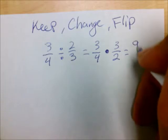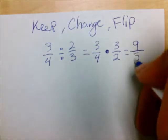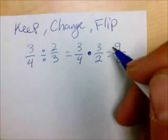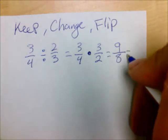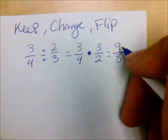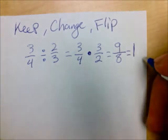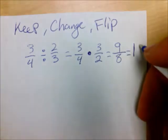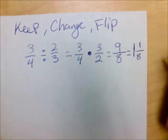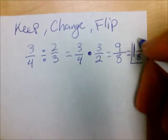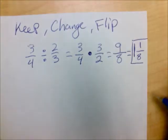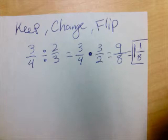Three times three is nine. Four times two is eight. Now I cannot keep this as an improper fraction. I need to change it to a mixed number. Eight goes into nine one whole time leaving, if I use eight of my nine, leaving one left over and the eight stays on the bottom. So three fourths divided by two thirds is one and one eighth.